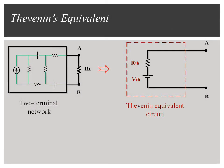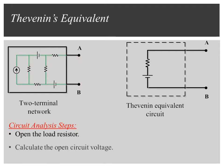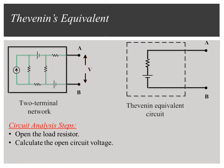How to find the Thevenin equivalent circuit? Step 1: In order to find V-Thevenin, open the load resistor between terminals A and B, then calculate the open circuit voltage between them. This voltage represents V-Thevenin.